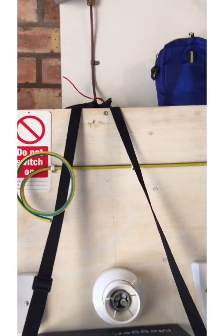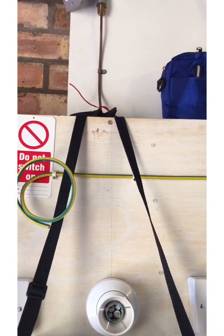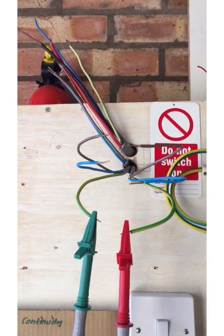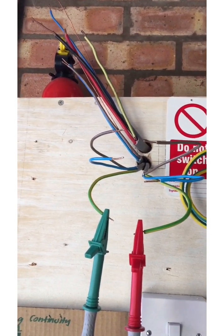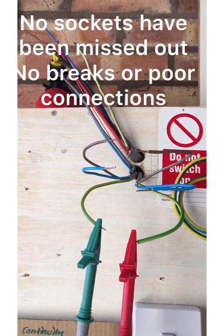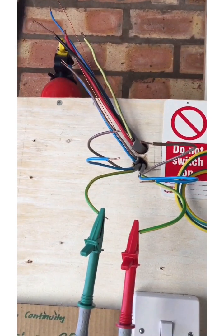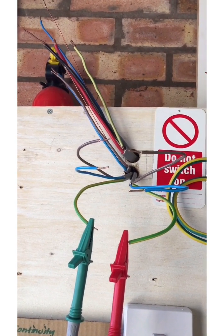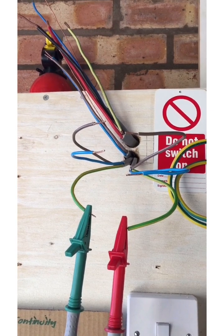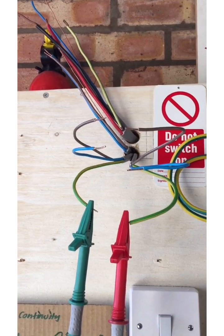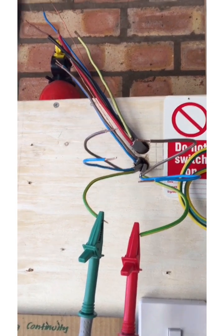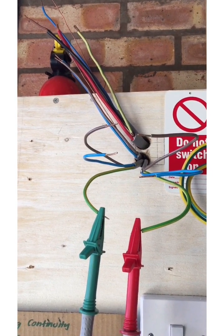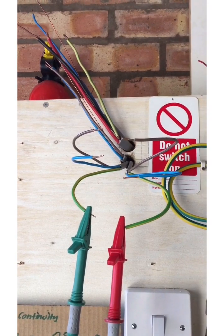So what that demonstrates to us is that those conductors there are continuously end-to-end. There's no breaks in the ring main. And also, something we're aware of is because the line and neutral are 2.5 millimeter squared and the CPC is 1.5, we expect a resistance difference between them. And for conductors at that size, we expect the CPC to be 1.67 times higher than the line or the neutral, which it is there or thereabouts.